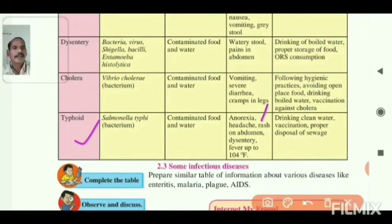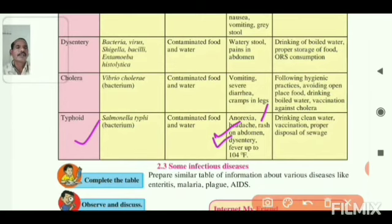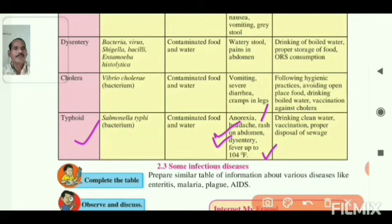Additional symptoms of typhoid include rash on the abdomen and high fever. Prevention includes drinking clean water and proper disposal of waste.